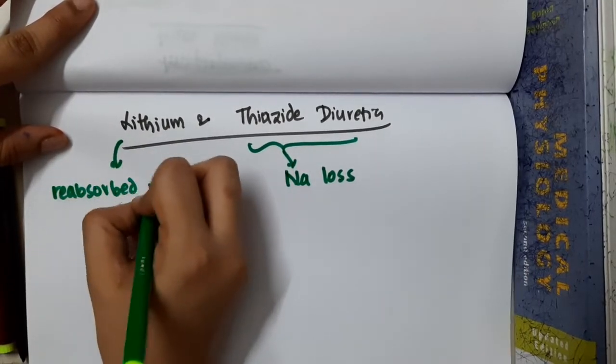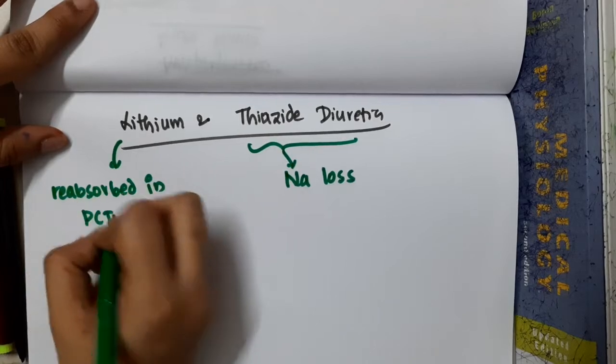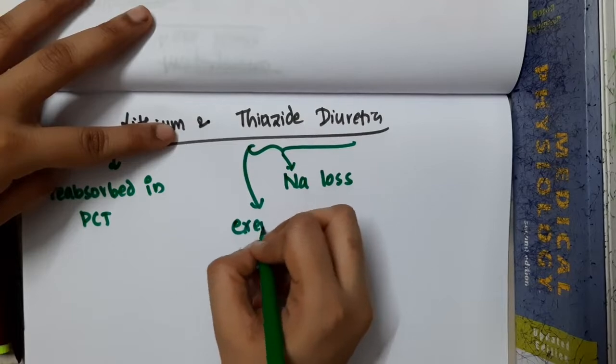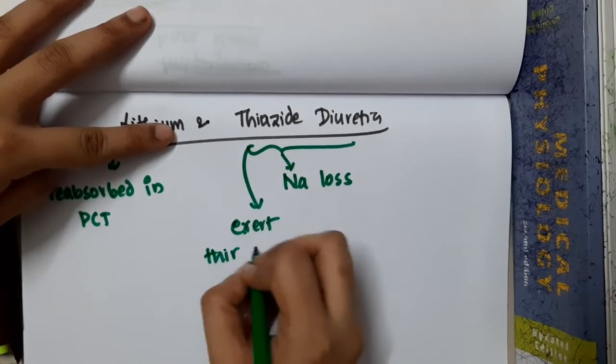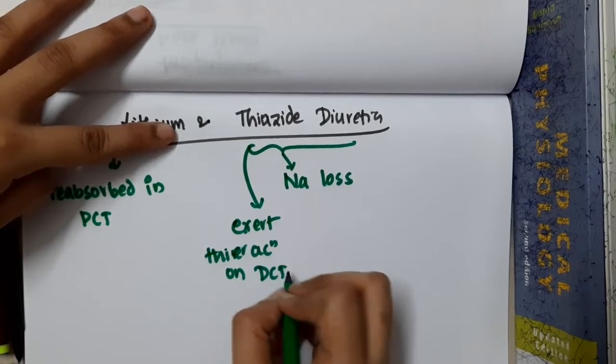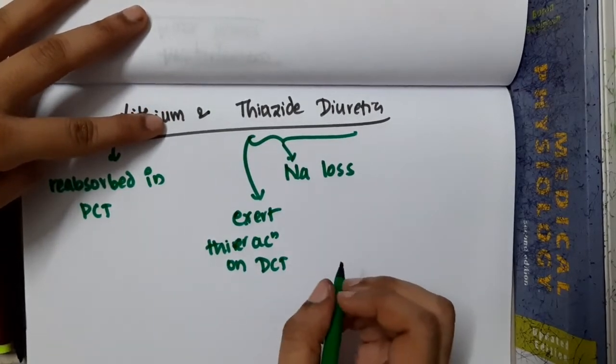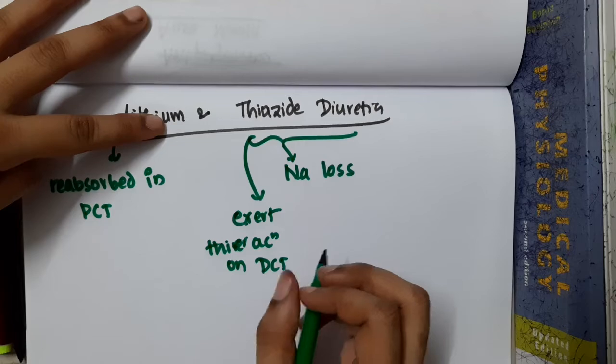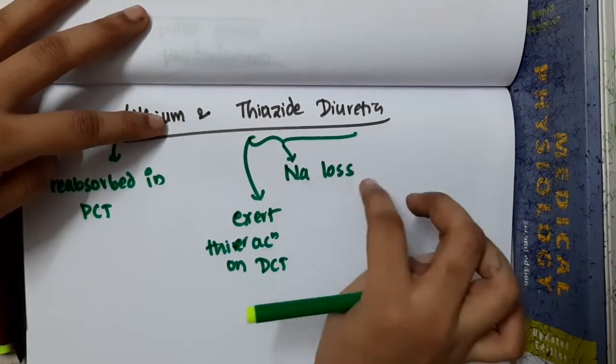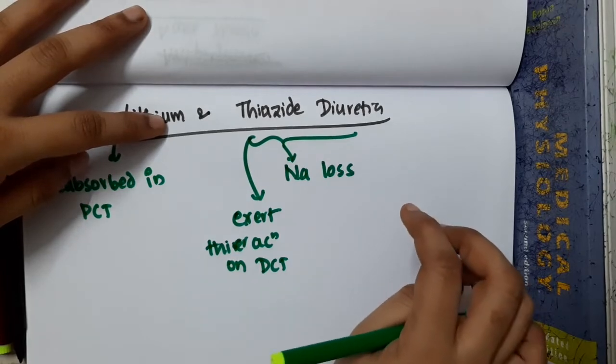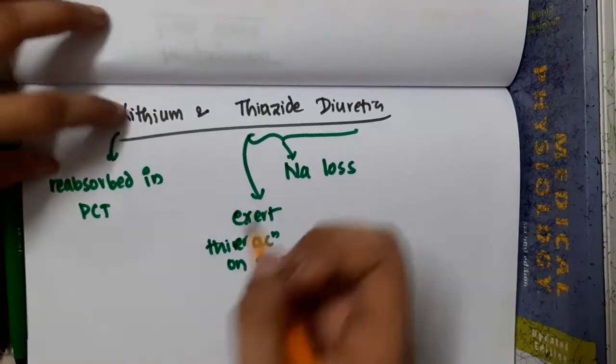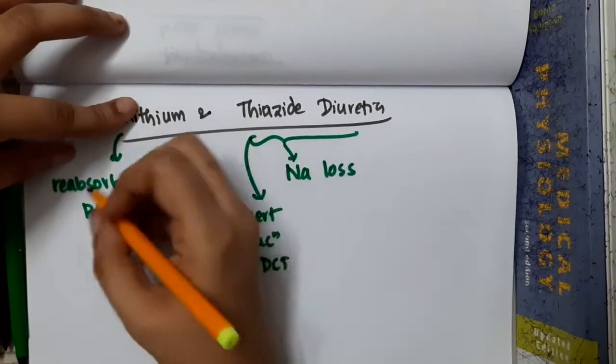Lithium is reabsorbed in proximal convoluted tubule, whereas thiazide diuretics exert their action on distal convoluted tubule. In thiazide diuretics there will be sodium loss, so thiazide diuretics gets confused with sodium and lithium.